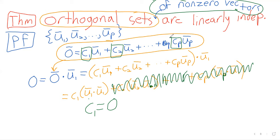Therefore this equation only has the trivial solution where everything is zero. Therefore this set is linearly independent. Linearly independent bases are nice — I already made that observation.